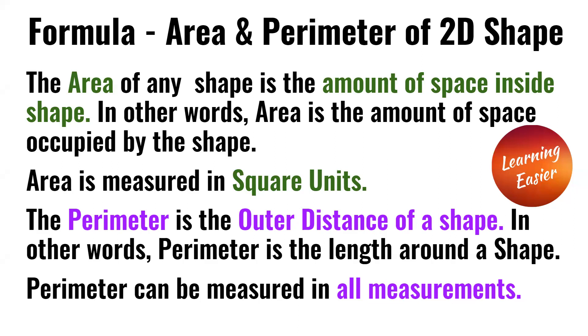The perimeter is the outer distance of a shape. In other words, perimeter is the length around a shape. Perimeter can be measured in all measurements.